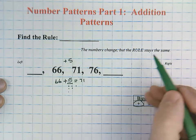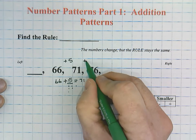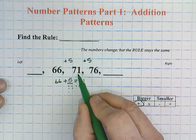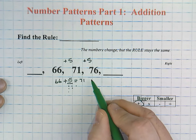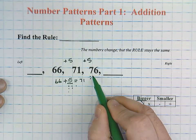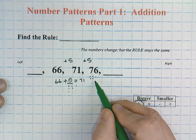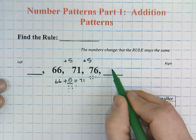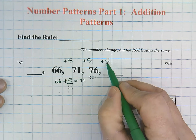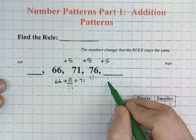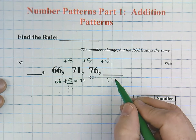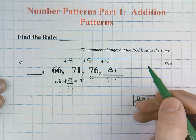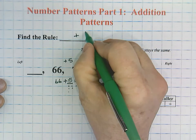Let's remember the rule stays the same, so 71 plus 5. I'm just going to count on [counting 72, 73, 74, 75, 76]. And there's our 76. Now we're going to count on 5 more: 76 [counting 77, 78, 79, 80, 81]. So our rule is plus 5.